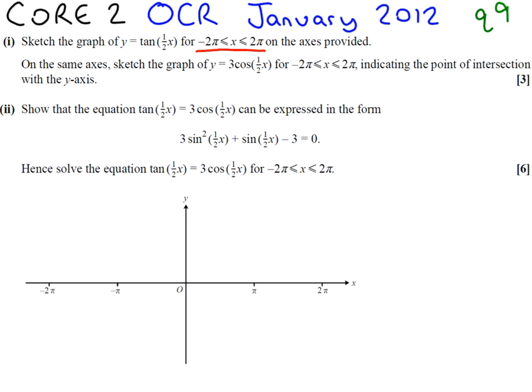If we read the question, it wants us to sketch the graph of y equals tan of a half x. It provides a set of axes, but it is still just a sketch. It doesn't have to be perfect. If we think about the original tan x graph, what it does is it has asymptotes at minus pi over 2 and pi over 2. So it would have been coming up like this and obviously repeating periodically.